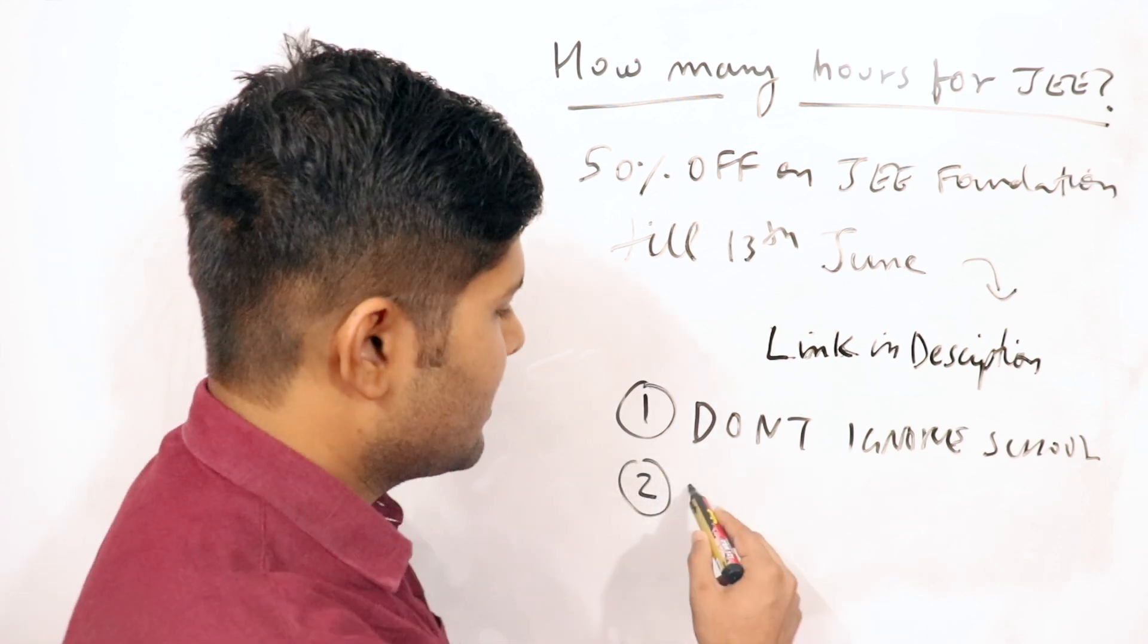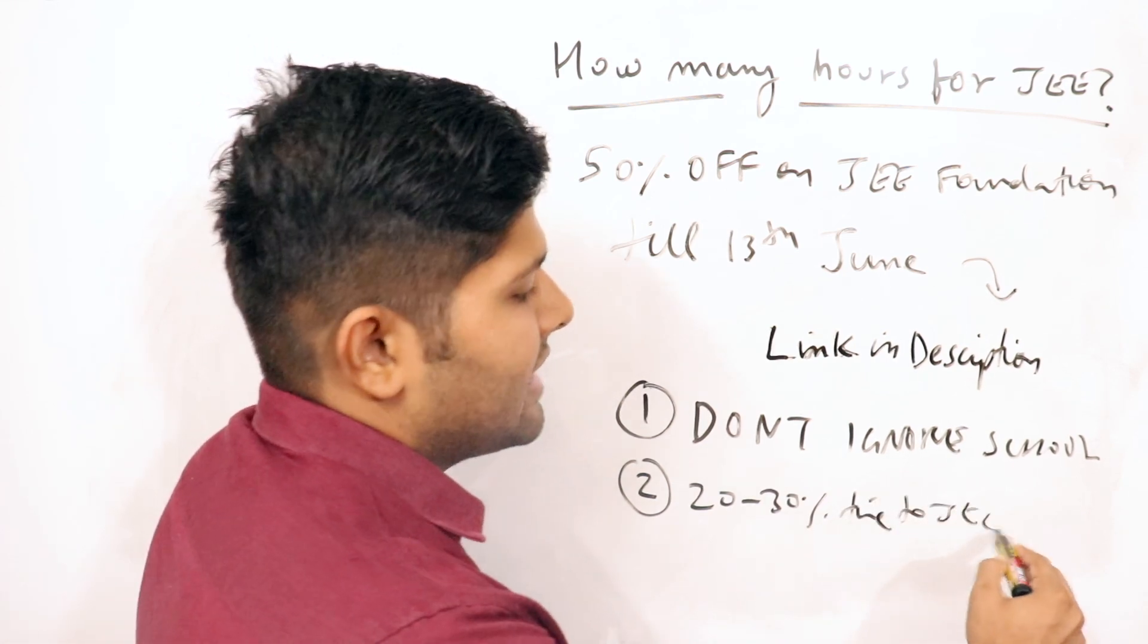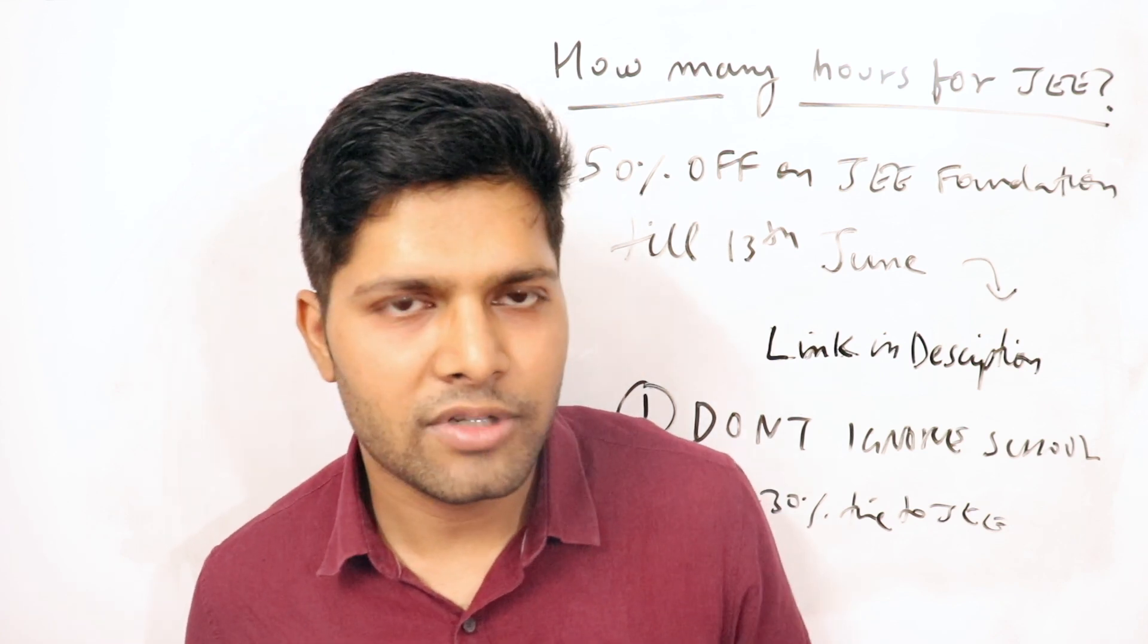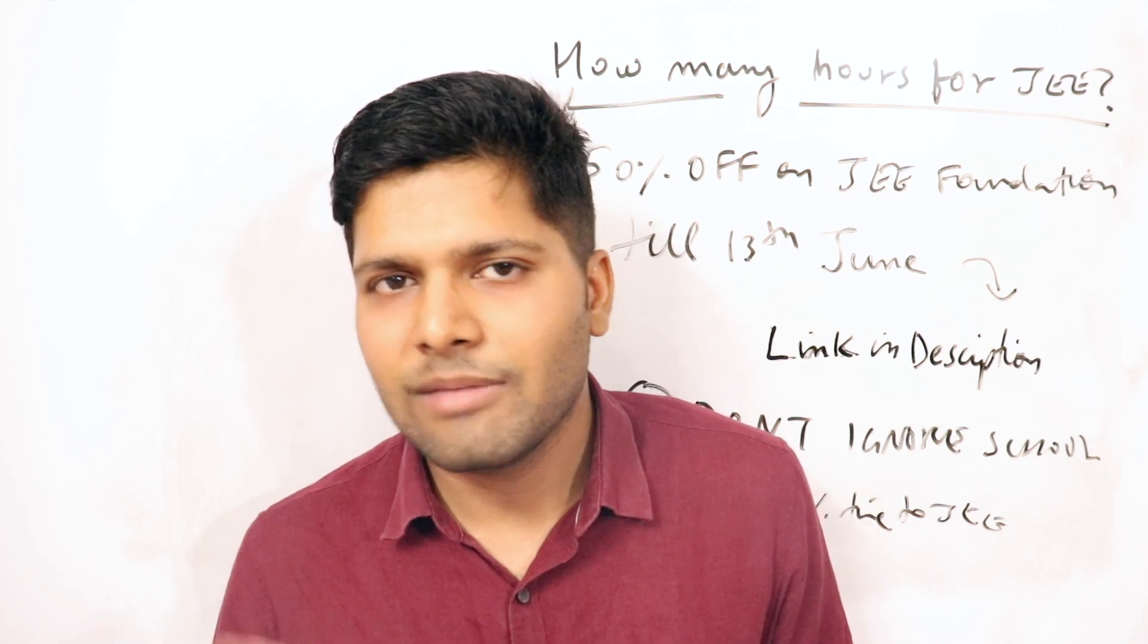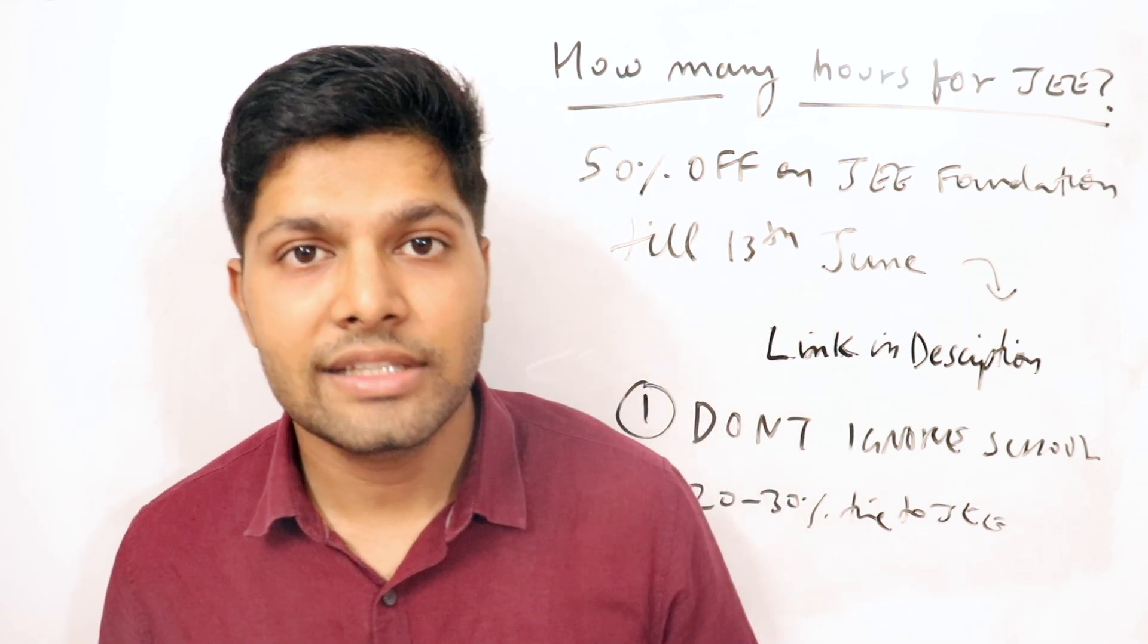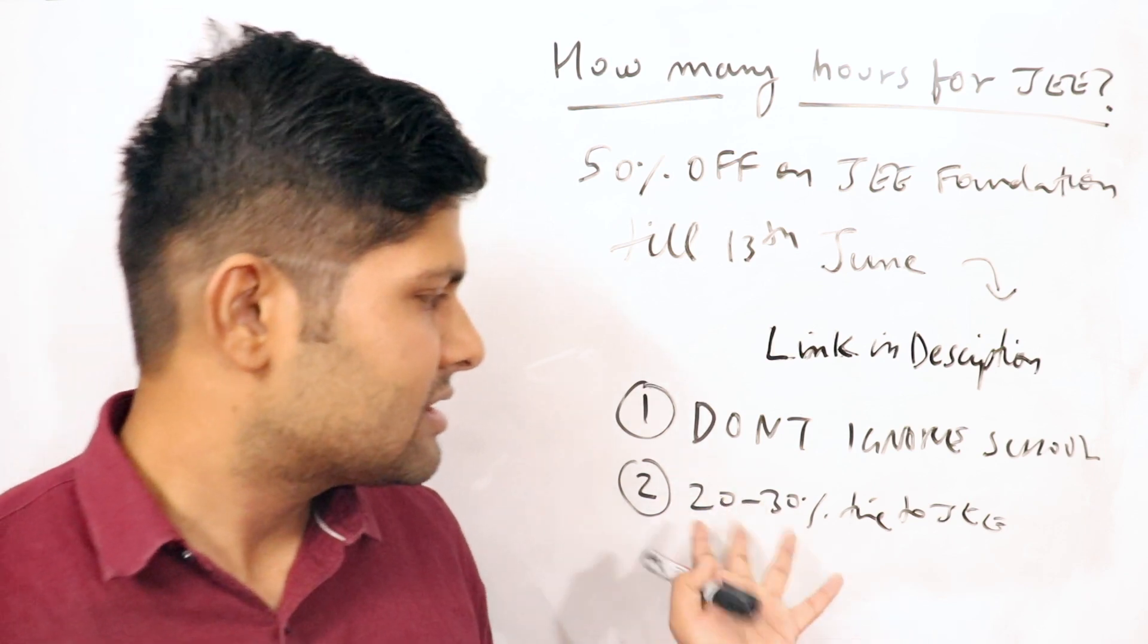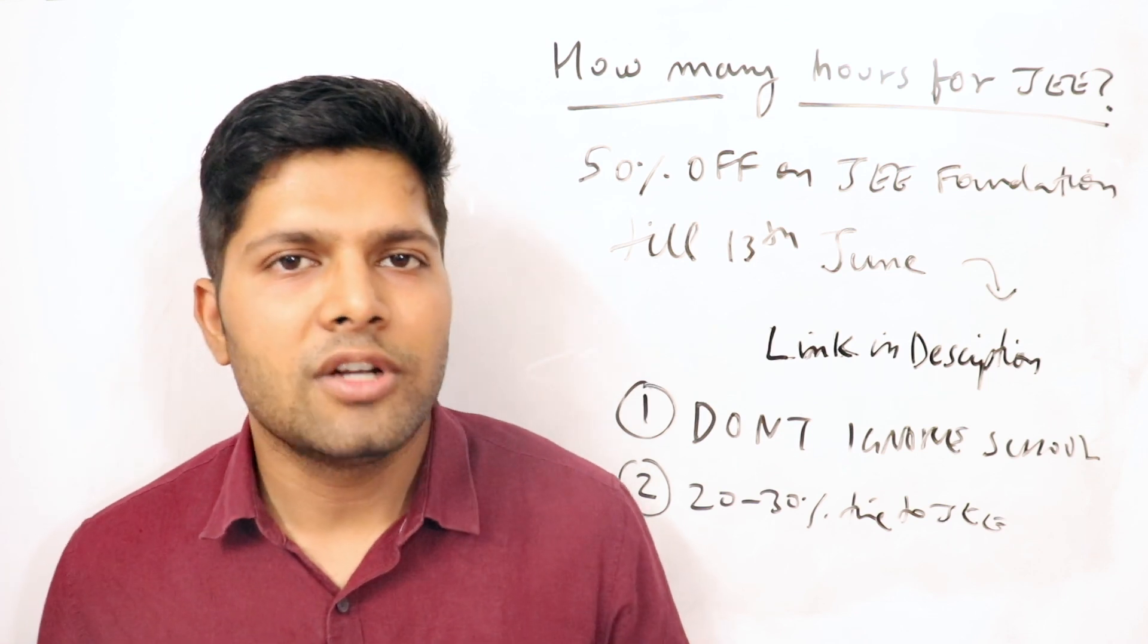Second is that you should devote at least 20 to 30% of your time to JEE. Let's say you go to school for 8 hours including traveling, so you have around 14 hours of active time. Out of that, 8 hours is gone in school, so you're left with 6 hours. Out of those 6 hours, you should try to spend at least 2 hours on JEE prep, which is around one-fourth or one-third.